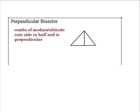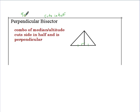Moving on, a perpendicular bisector. If you think about the name — perpendicular means it meets at 90 degrees, and bisector means it cuts in half — so it does exactly what the name says. A perpendicular bisector meets at a 90-degree angle and cuts the line in half. It's sort of a combination of a median and an altitude: it cuts a side in half and is perpendicular.